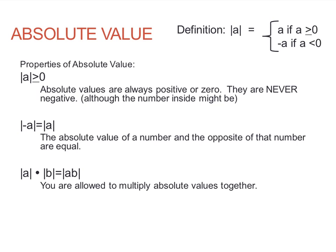Next topic: absolute value. You've probably heard it defined as the distance from zero on a number line. Here's zero, here's the number seven — they are seven units apart, so the absolute value of seven is seven. If you look at negative three, it's three units from zero on a number line, so its absolute value is three. You can also simply think of absolute value as 'just make it positive.'